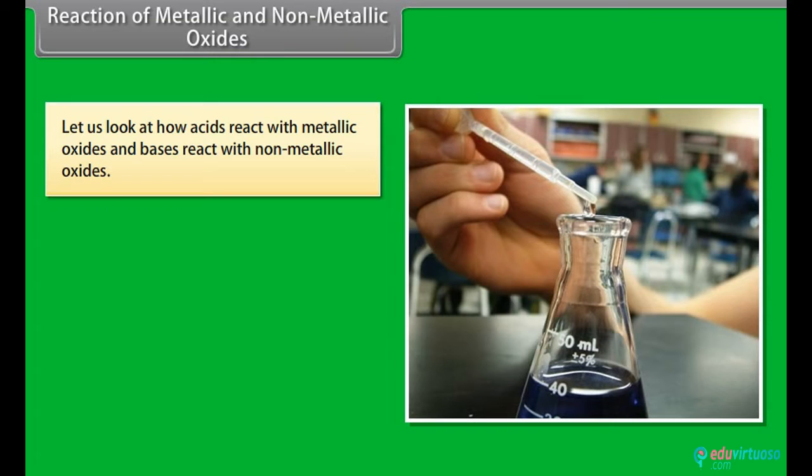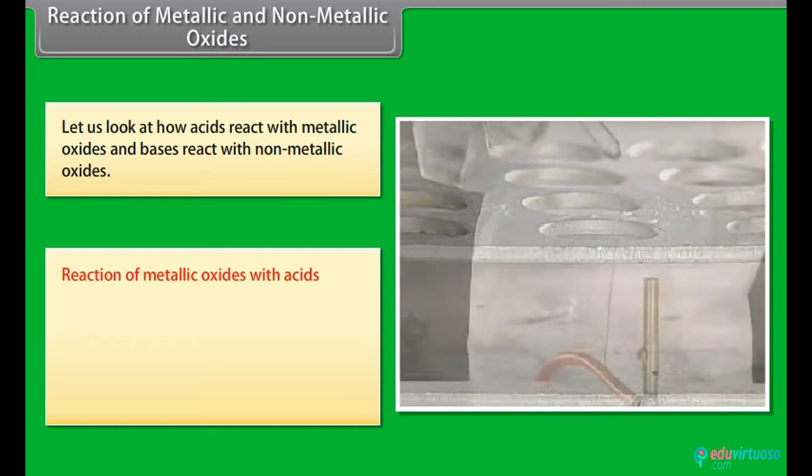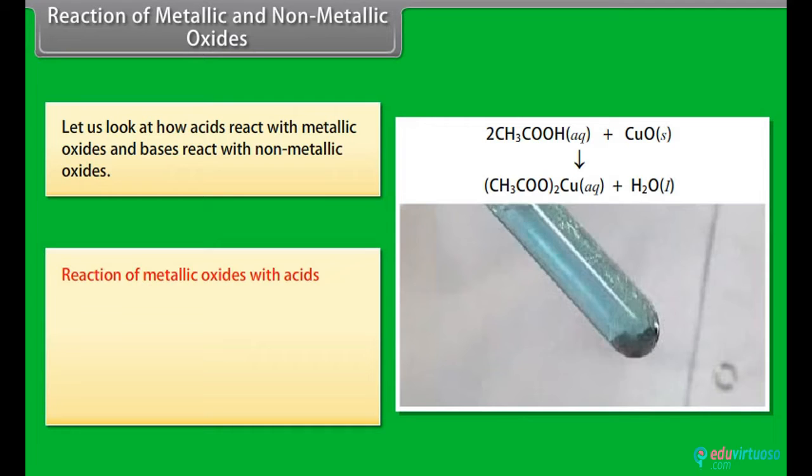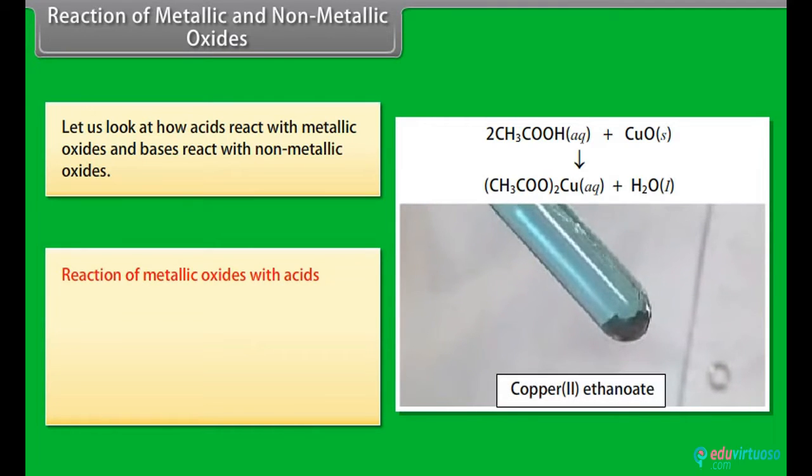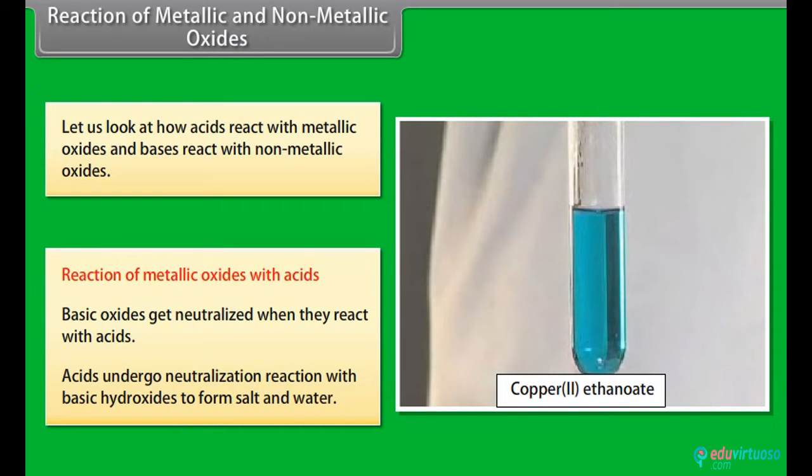Reaction of metallic and non-metallic oxides. Now that you have seen how acids and bases react with metals, hydrogen carbonates, and with each other, let us look at how acids react with metallic oxides and bases react with non-metallic oxides. Reaction of metallic oxides with acids. Oxides that add on hydroxyl ions to their molecules are called basic oxides. These oxides get neutralized when they react with acids. Acids undergo neutralization reaction with basic hydroxides to form salt and water.